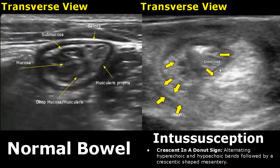A crescent-in-a-donut sign can be seen in the transverse plane. There are alternating hyperechoic and hypoechoic bands seen on one side and a crescentic-shaped hyperechoic structure made of mesenteric fat on the other side.